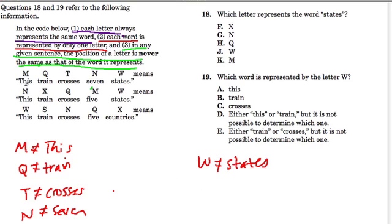And then here we have another row. So now we know N can't be seven. It also can't be this. And let's look at the last one, or crosses. It can't be any of those words. I'm looking there, here, and here. Q can't be train, crosses, or five. Train, crosses, or five.